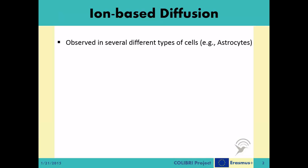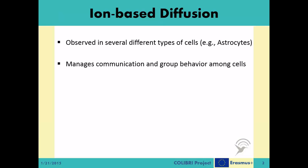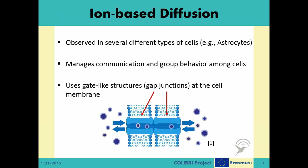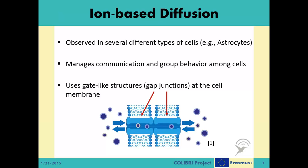These astrocyte cells reside in brain and spinal cord tissues. They have a variety of roles, which can somewhat be summarized as supporting the neuron cells and maintaining their continuous operation. One important aspect of astrocytes is that they coordinate and collaborate among themselves to form a group behavior. They achieve this coordination via gate-like structures at their cell membranes called gap junctions, which allow the passage of small molecules and ions between neighboring cells while barring bigger molecules and organelles. This type of intercell communication is called intercellular calcium waves, or ICW in short, in the cell biology literature.